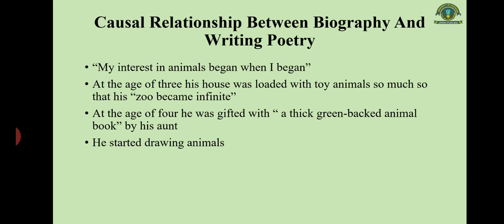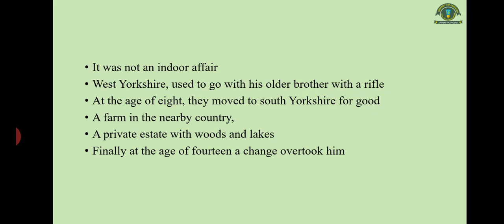At the age of three, his house was loaded with toy animals — his personal zoo became infinite. At the age of four, he was gifted with a thick green-backed animal book by his aunt, reinforcing his interest in animals. He then started drawing animals. He says in Poetry in the Making: 'In my drawing the animals were very good in the books, but they seemed even better in my drawing,' showing his keen interest in animals.